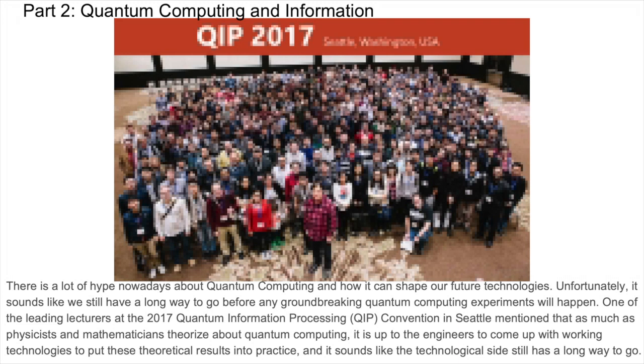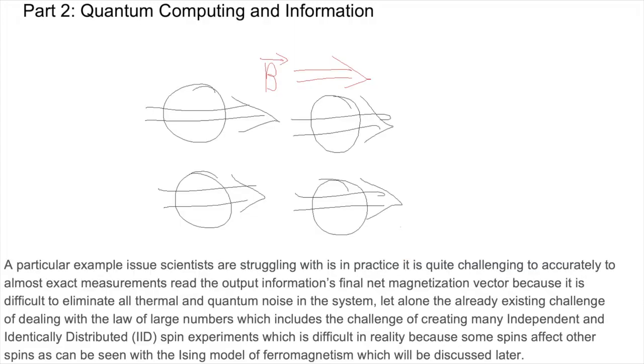There is a lot of hype nowadays about quantum computing and how it can shape our future technologies. Unfortunately, it sounds like we still have a long way to go before any groundbreaking quantum computing experiments will happen. One of the leading lecturers at the 2017 Quantum Information Processing Convention in Seattle mentioned that as much as physicists and mathematicians like to theorize about quantum computing, it is up to the engineers to come up with practical working technologies to put these theoretical results into practice. And it sounds like the technological side still has a long way to go. A particular example issue scientists are struggling with is, in practice, it is quite challenging to accurately to almost exact measurements read the output information's final net magnetization vector, because it is difficult to eliminate all thermal and quantum noise in the system, let alone the already existing challenge of dealing with the law of large numbers, which includes the challenge of creating many independent and identically distributed IID spin experiments, which is difficult in reality because some spins affect other spins, as can be seen with the Ising model of ferromagnetism, which will be discussed later.